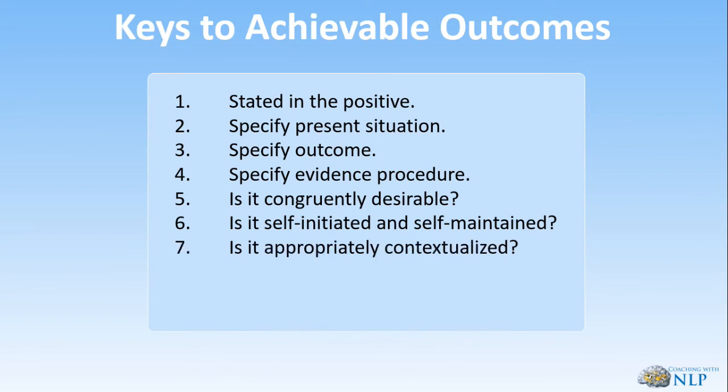Number seven: is it appropriately contextualized? Where, when, how, and with whom do you want this outcome? Number eight: what resources are needed? What do you have now, and what do you need to get to be able to achieve this outcome?